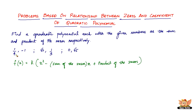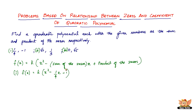So f(x) equals k times x squared, minus one-by-four x, plus negative one. That gives us f(x) equals k times x squared minus one-by-four x minus one. This is the required quadratic equation for the first set.